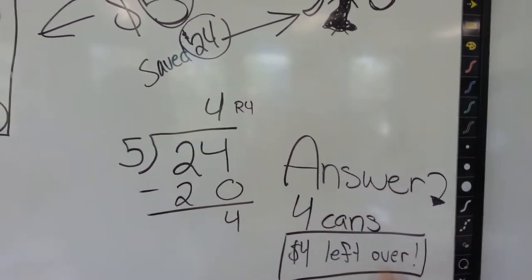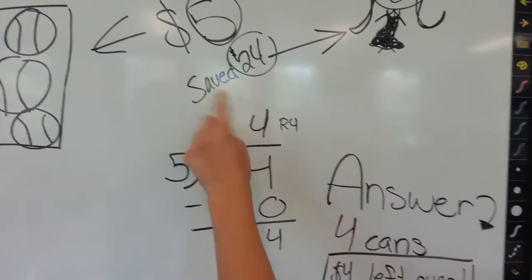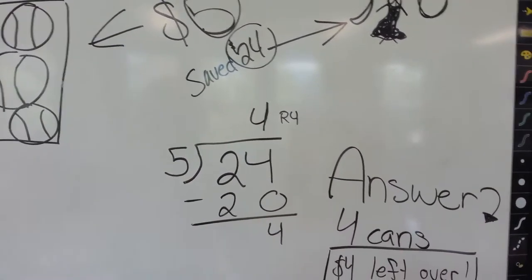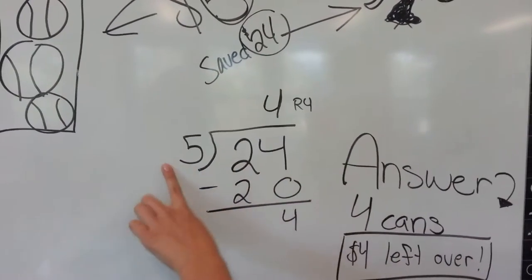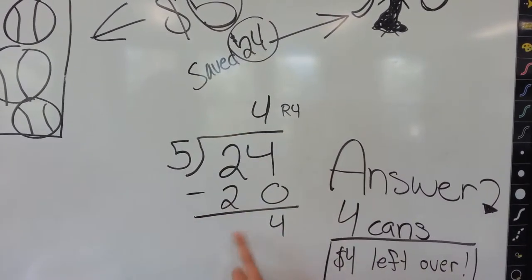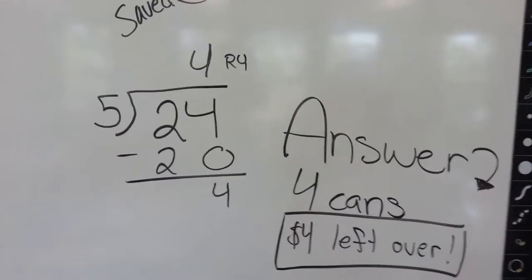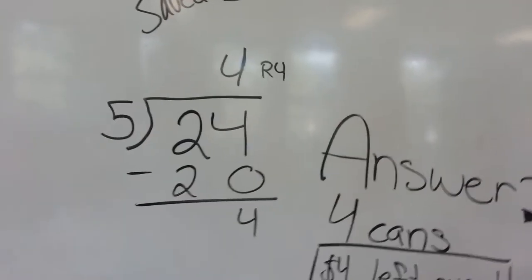So I drew her out. The ball cost five dollars. She saved twenty-four. So I knew that we had to divide twenty-four by five. Five goes into twenty-four four times. Twenty minus twenty-four is four. And you understand that the four means four dollars left, and the first one's the four cans. You rock.